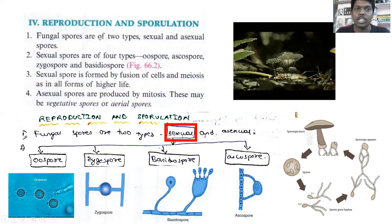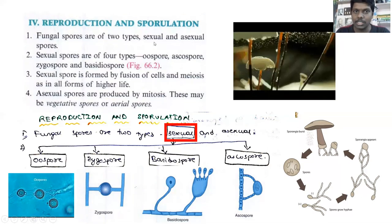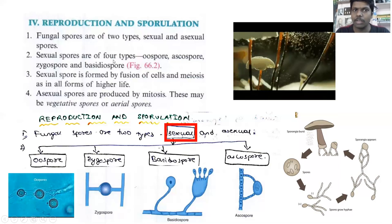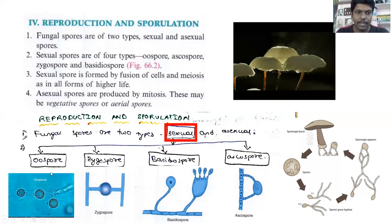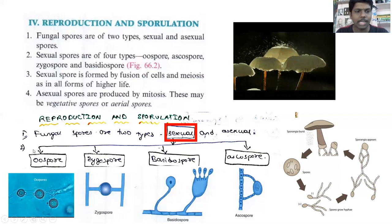Fungal spores are of two types: they have both sexual spores and asexual spores. Sexual spores are of four types: Oospores, Zygospores, Basidiospores, and Ascospores.